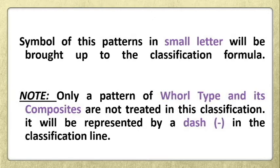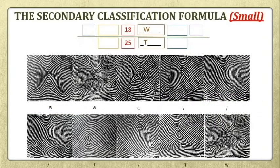The symbol of the pattern in small letters will be brought up to the classification formula. Take note: only patterns of the whorl type and its composites are not treated in this classification — they will be represented by a dash in the classification line. Meaning to say, we only classify the radial loop, the ulnar loop, the tented arc, and the plain arc during the small letter group, and the whorl pattern will be represented by a dash. So, let us classify.